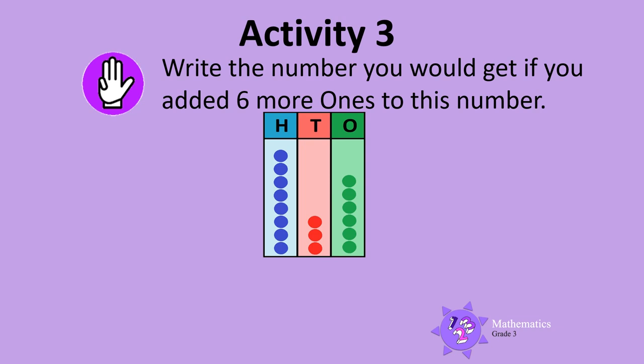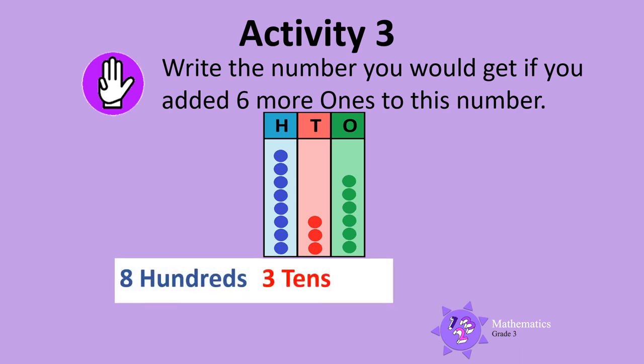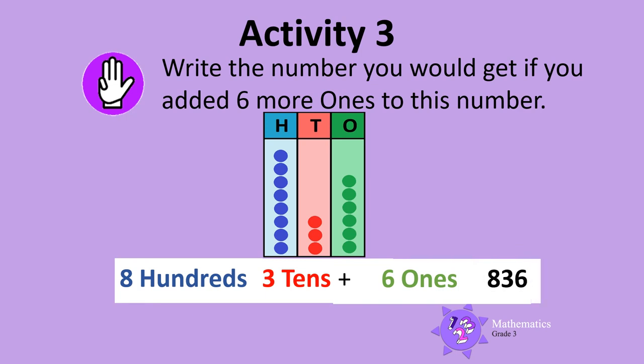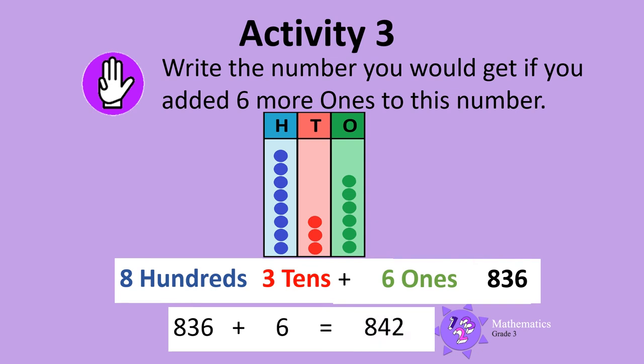Activity 3. Write the number you would get if you added 6 more ones to this number. First, let's write down the number shown on this abacus. There are 8 hundreds, 3 tens, and 6 ones, so the number shown is 836. Now we add 6 more to this number. 836 and 6 is 842.